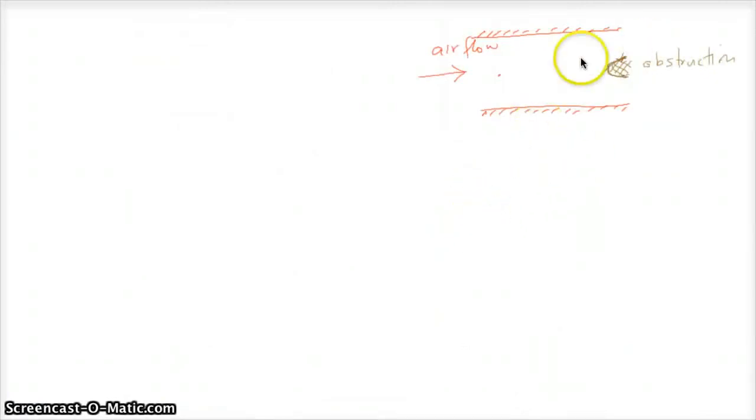So consider the air flow in a pipe, and consider a streamline—I said a jet earlier—but consider a streamline in that air flow from point 1 to point 2, where point 2 is an obstruction where the flow ends for this particular streamline.